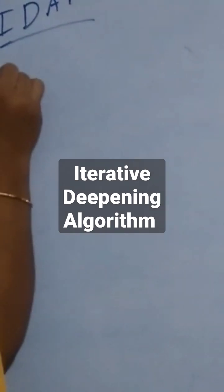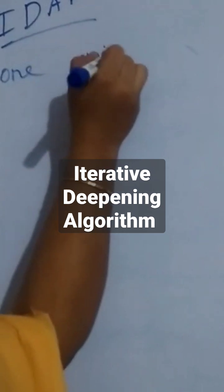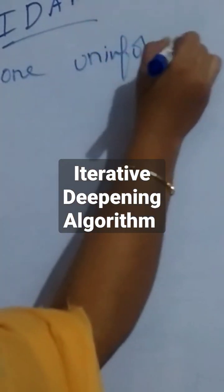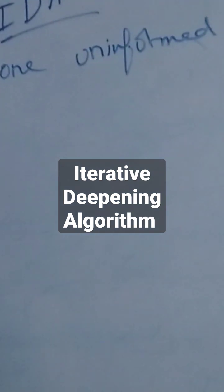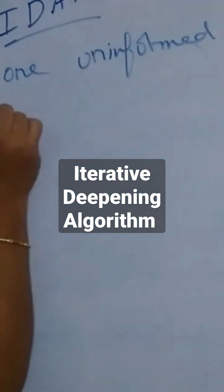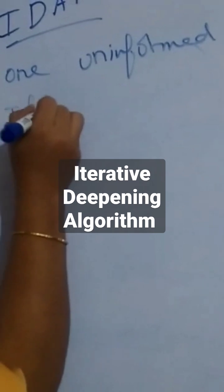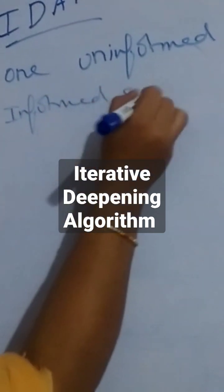ID is one uninformed search, and coming into A star, it is informed search. We combine it with A star.